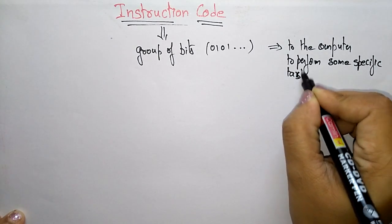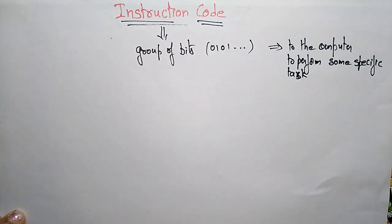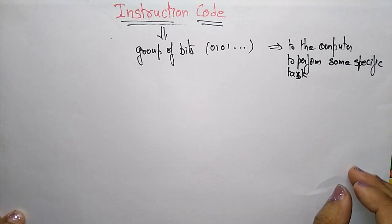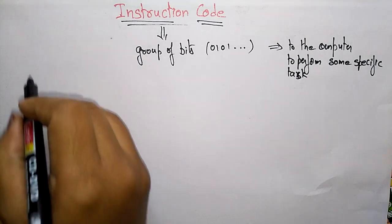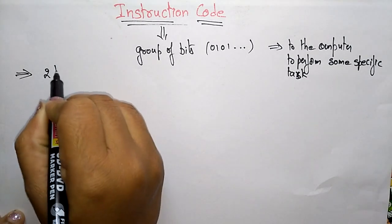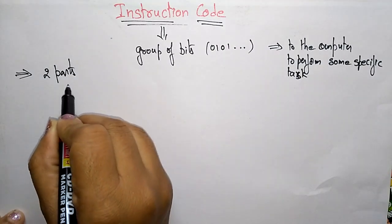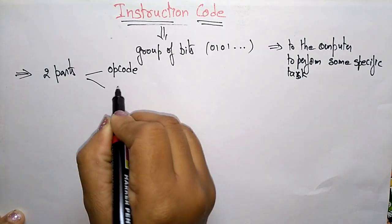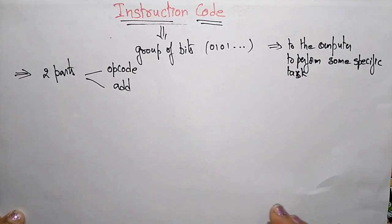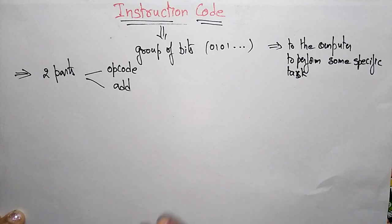Every computer has its own particular instruction code format. Whatever computer you are taking, they have their own instruction format. The simple way to organize the instruction code is by using two parts. The instruction code can be organized into two parts: one is op code and the next one is the address. So the complete instruction code is divided into op code and address.